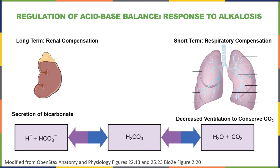In contrast, in response to alkalosis, the long-term response in the kidney will be to secrete bicarbonate ions, whereas the short-term response of the respiratory system will be to decrease the pulmonary ventilation rate, leading to a decrease in the rate of carbon dioxide excretion. Together, the urinary and respiratory systems will have the effect of decreasing the blood pH in response to alkalosis.